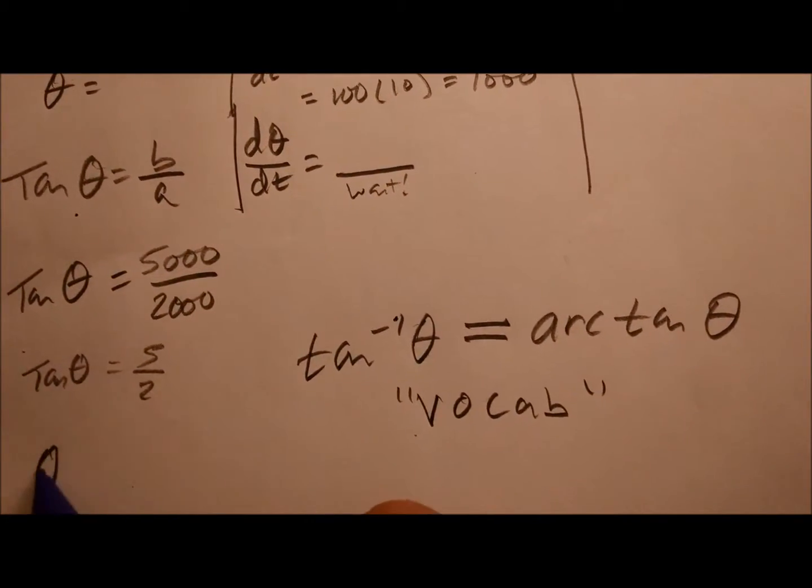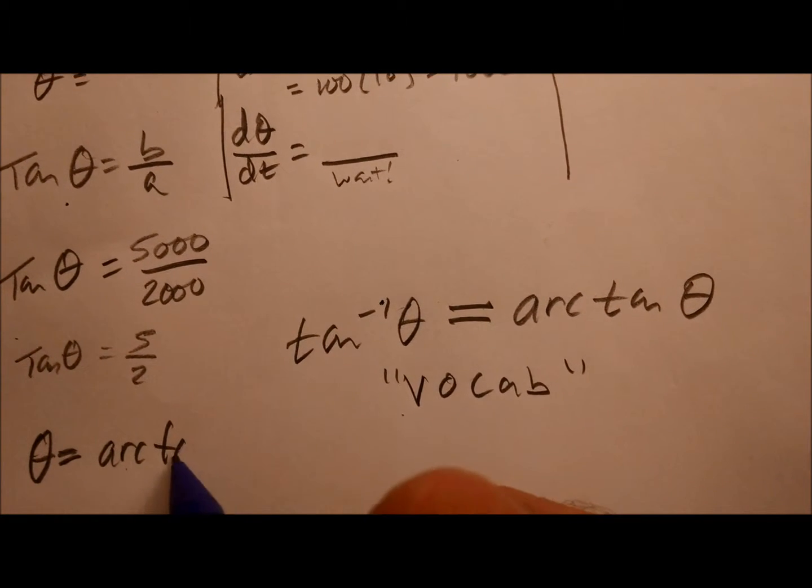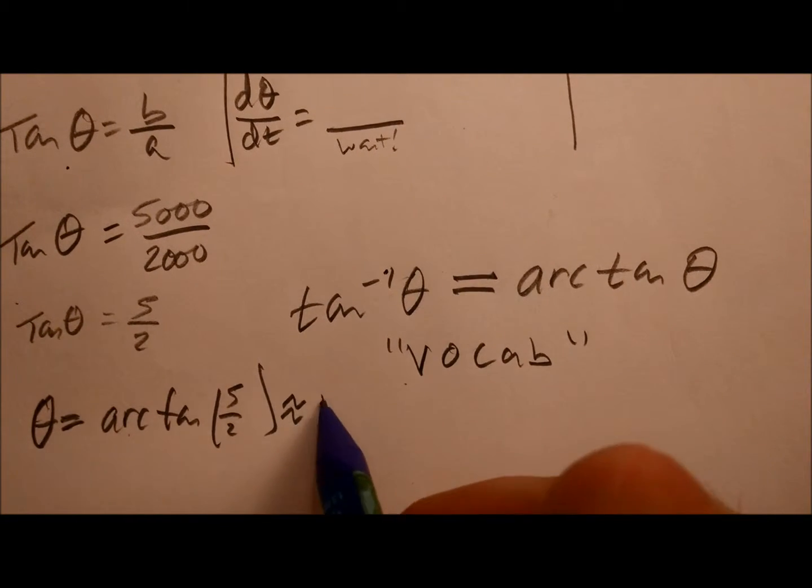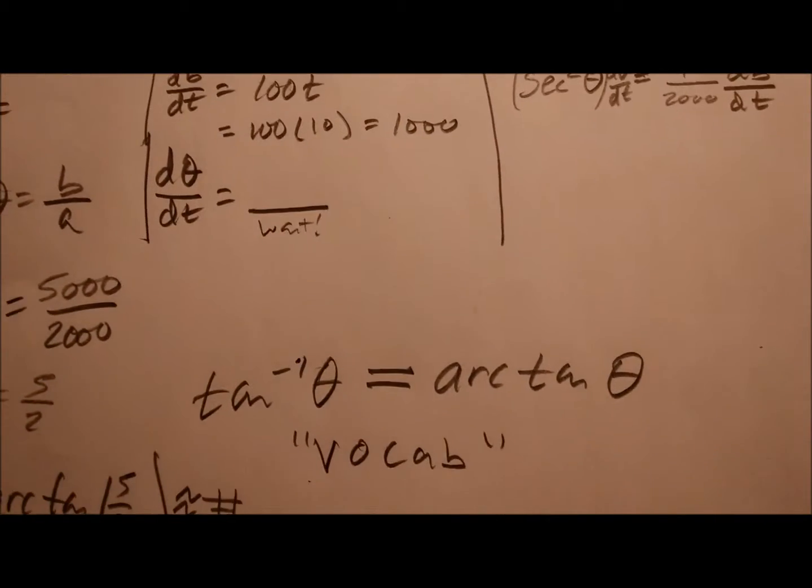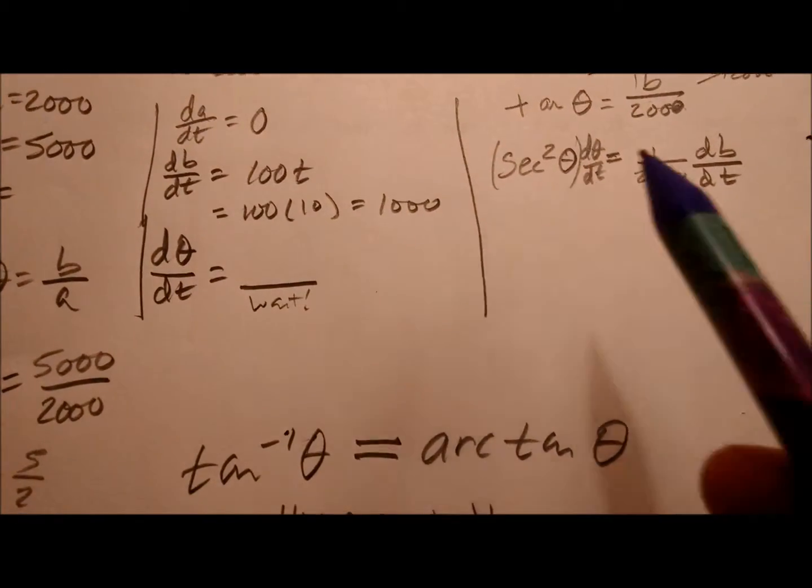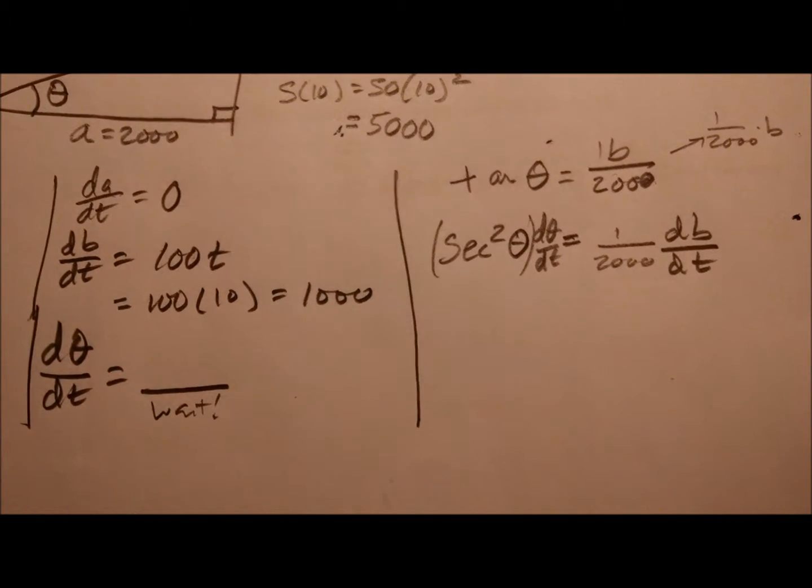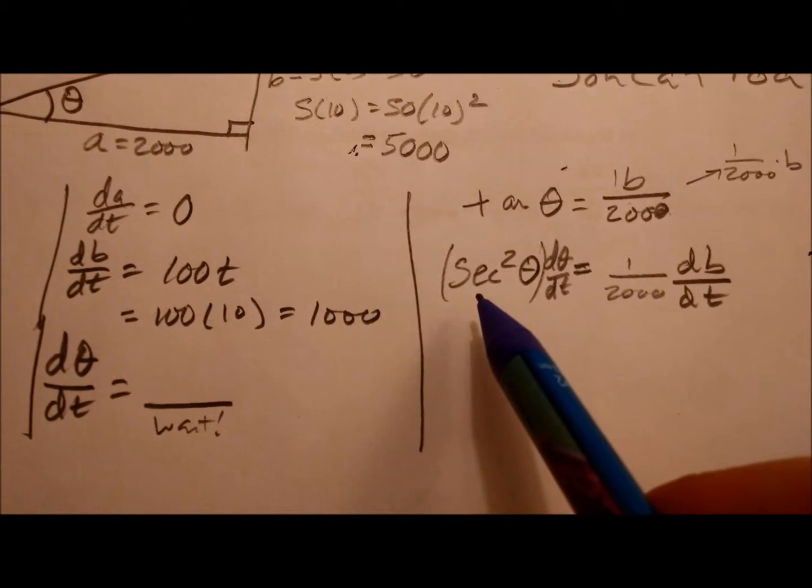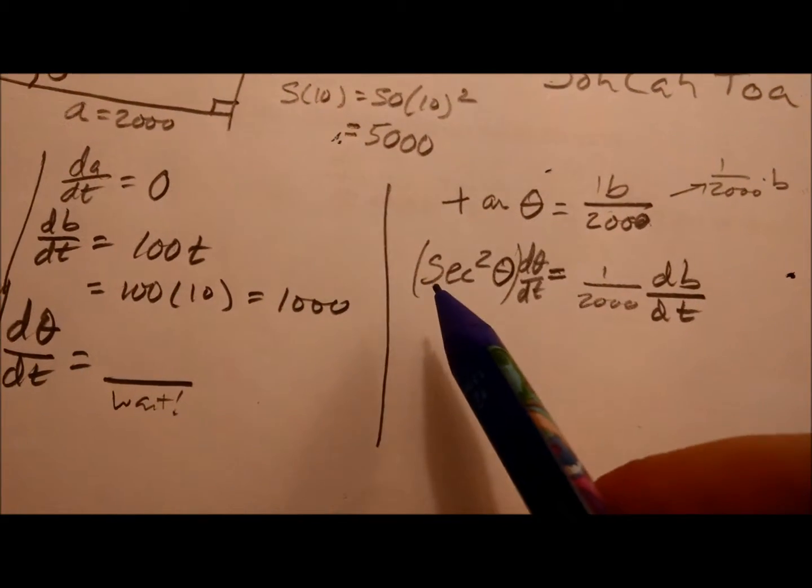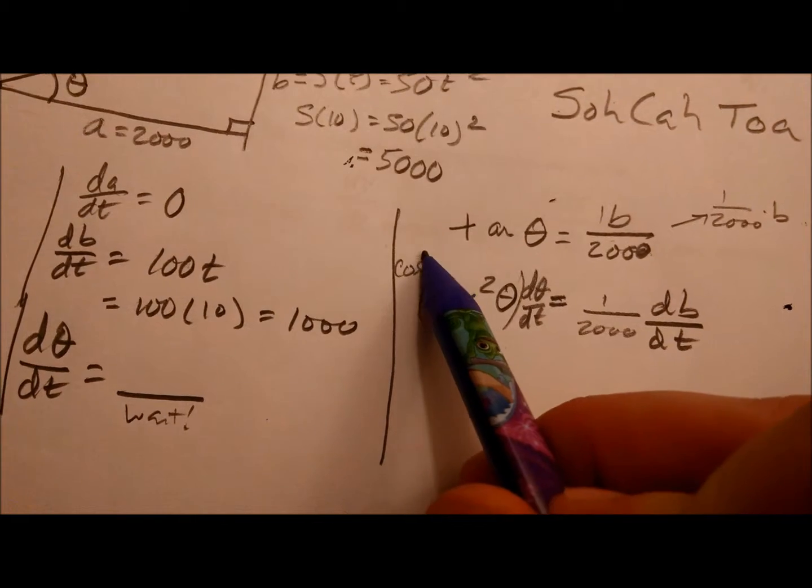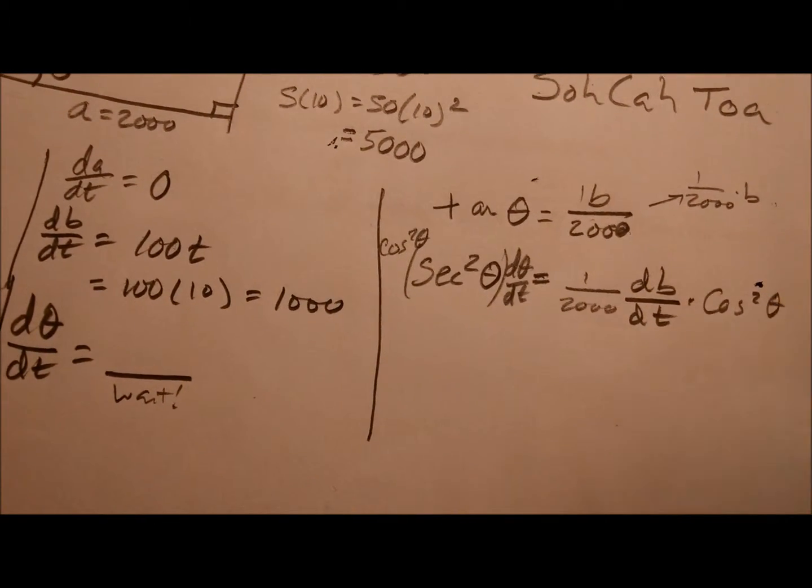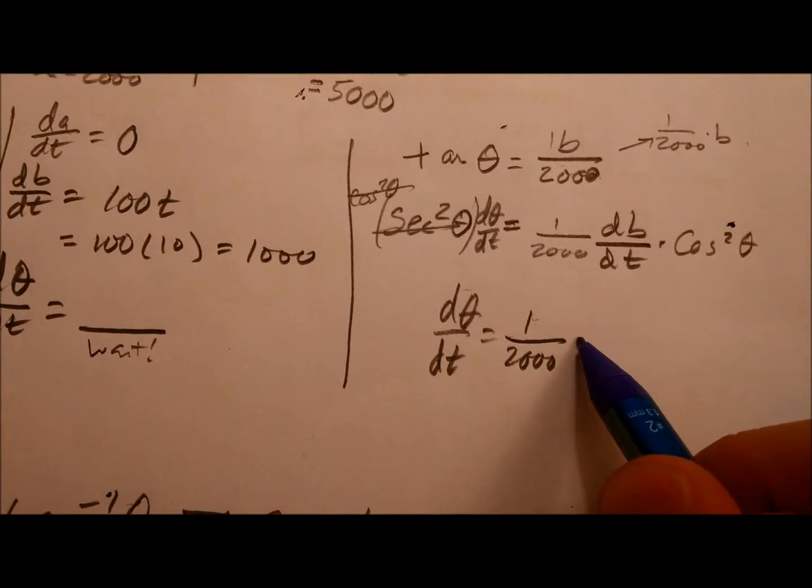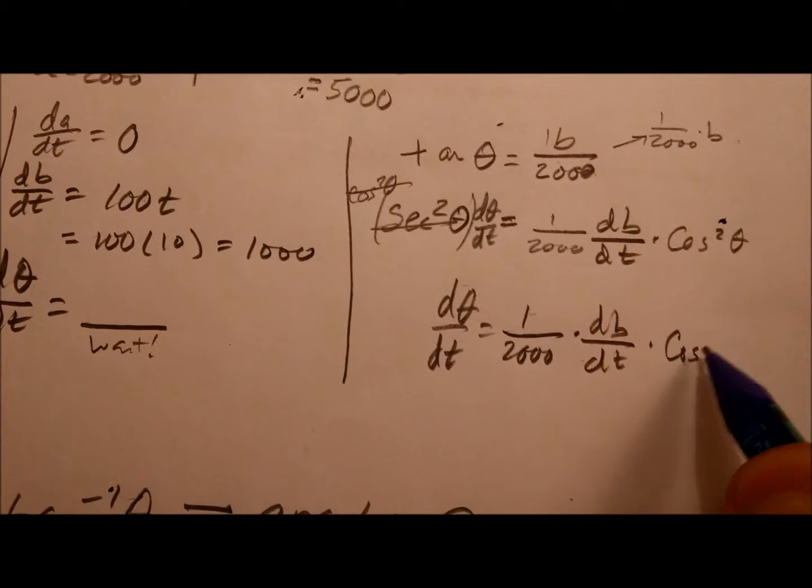So we can simplify this really quick. If I use the inverse tangent here, I get theta is equal to arctangent of 5 halves, which I don't have my calculator on me, it's approximately some number. And I'm going to be using that up here. So I'm going to get D theta DT all by itself, so I'm just going to multiply both sides by the reciprocal of this, which, what's the reciprocal of secant? Cosine. So I can multiply both sides by cosine squared theta times cosine squared theta. That's going to cancel my secant. I have D theta DT is equal to 1 over 2,000 times DBDT times cosine squared of theta.